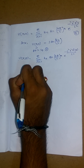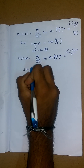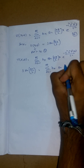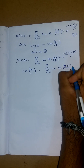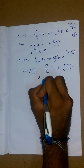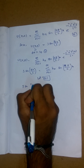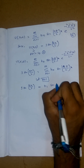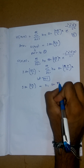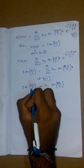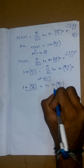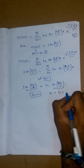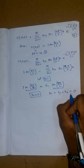Therefore 3 sin(πx/L) = Σ (n=1 to ∞) B_n sin(nπx/L). Setting n = 1, we get 3 sin(πx/L) = B₁ sin(πx/L). Equating both sides, B₁ = 3, and the remaining coefficients B₂ = B₃ = B₄ = … = 0.